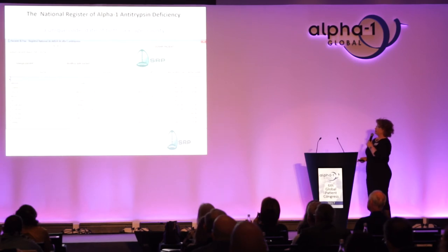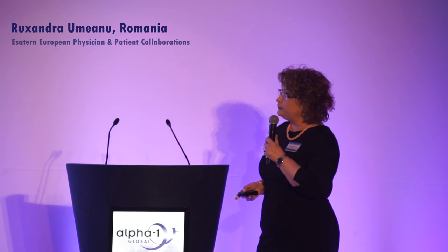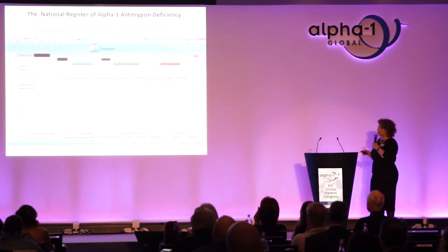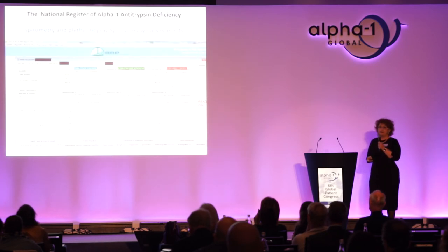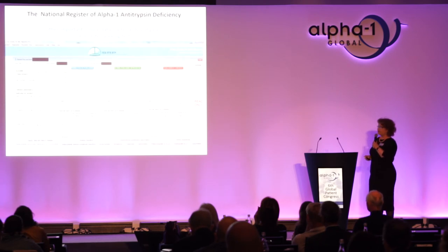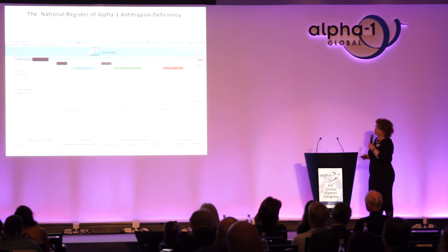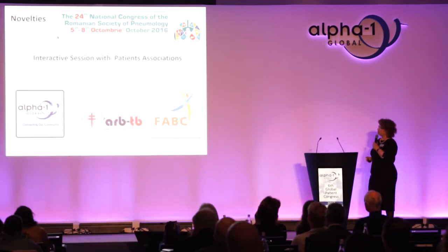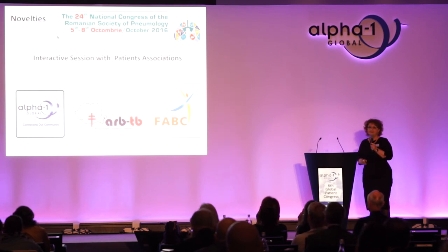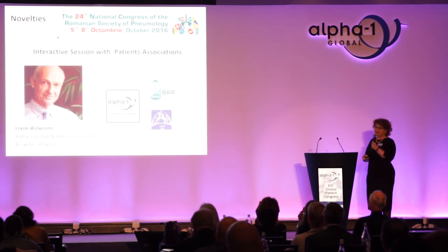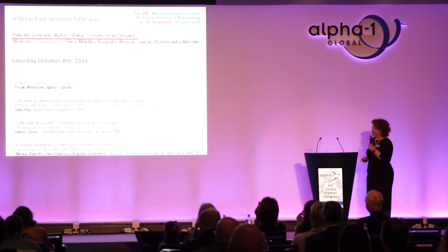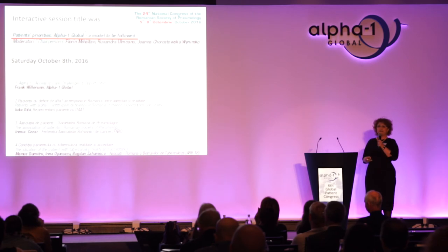The official Romanian website for Alpha-1 deficiency was founded in 2016, and we started completing the National Register of Alpha-1 deficiency, also in 2016, founded with the support of the Romanian Society of Pulmonology and the excellent work of Ana Zaharia, an exceptional young pneumologist and coordinator of Alpha-1 testing in Romania. The National Register includes each patient's unique code, date of birth, sex, age, county, reason for testing, spirometry, phenotype, plasma value, successive assessments of spirometry and plethysmography, and other clinical data including arterial blood gases and six-minute walking tests. As a novelty, at the last National Congress of the Romanian Society of Pneumology in October, we had interactive sessions with patient associations. Frank was guest of honor, and the interactive session was entitled 'Patients' Priorities, Alpha-1 Global: A Model to be Followed.'